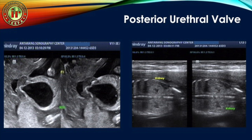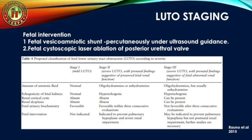Here is a case of posterior urethral valve showing a thick-walled bladder with the typical keyhole sign. The kidneys are highly echogenic and there is central calyceal dilatation. With recent advances, fetal interventions are possible in LUTO, including vesicoamniotic shunting done percutaneously under ultrasound guidance, or fetal cystoscopic laser ablation of the posterior urethral valve.